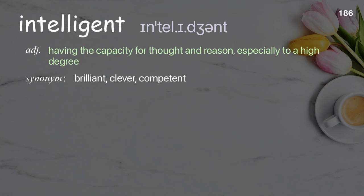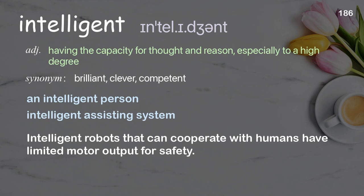Intelligent: having the capacity for thought and reason, especially to a high degree. Examples: an intelligent person; intelligent assisting system; intelligent robots that can cooperate with humans have limited motor output for safety.